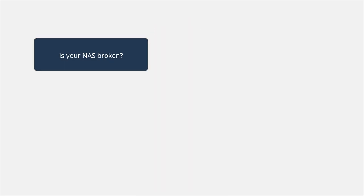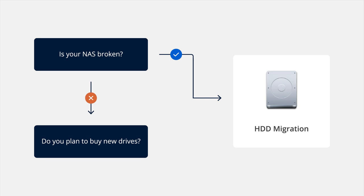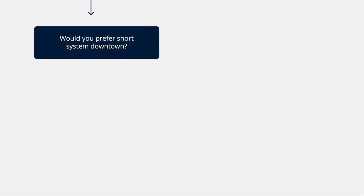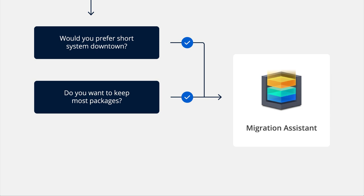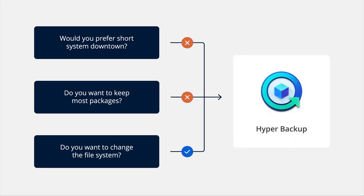Now that you know all of the ways that you can migrate your data, let's go over a flowchart with a few examples to decide which tool would be best in different situations. First, if your current NAS is out of commission, it makes the most sense to take the drives out of your old device and migrate them into the new one. If your current device is working fine and you're going to purchase drives for your new device, we'll need another way to transfer the data. If the amount of storage on your new device is not going to be twice as large as your existing solution, you'll want to use Migration Assistant. If you need short system downtime, or need to keep your data and packages entirely or almost entirely the same, you should also use Migration Assistant. Otherwise, if you want to use a different file system or RAID configuration on the new device, you should go with Hyper Backup.